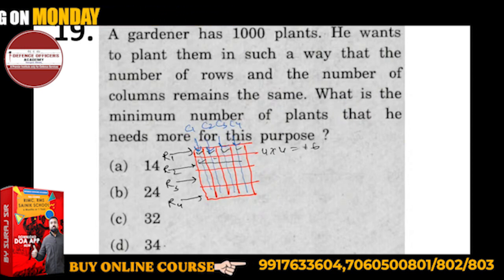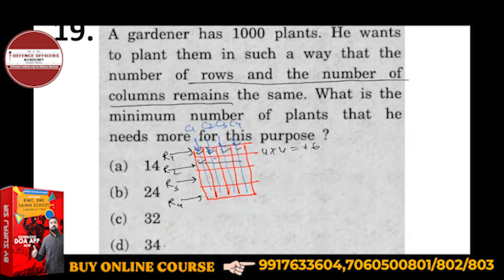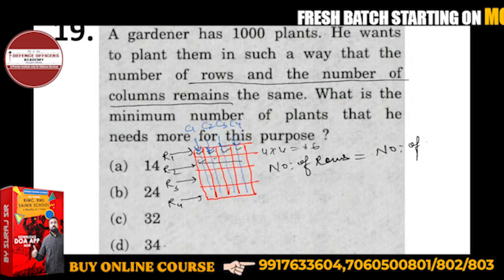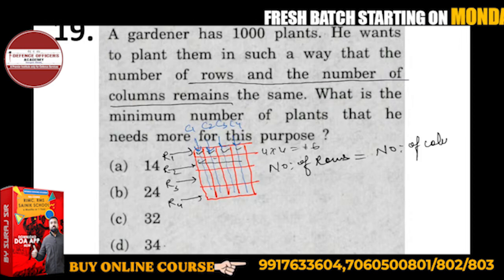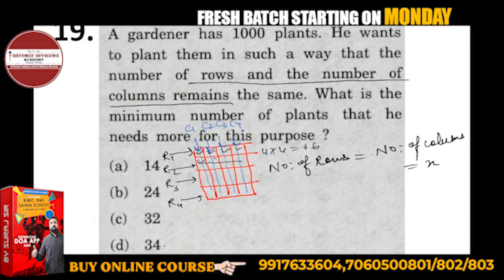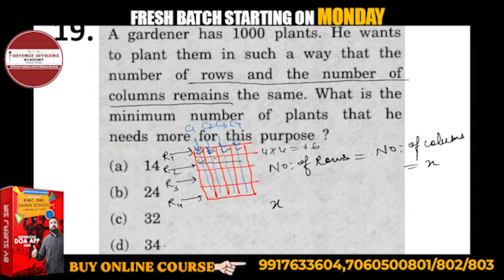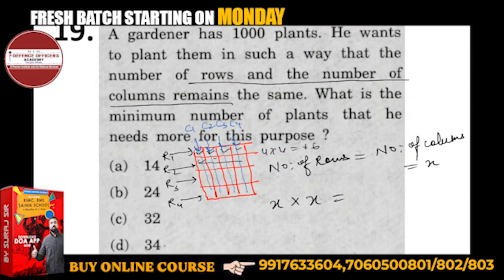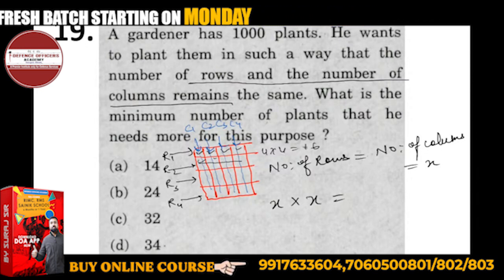We have to have more plants. So how many more will we need? Since rows equal columns, we can take number of rows = x, number of columns = x. So x into x — that is x squared — will give you the total number of plants.